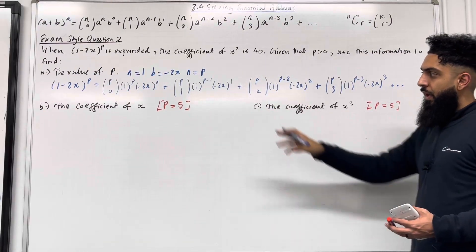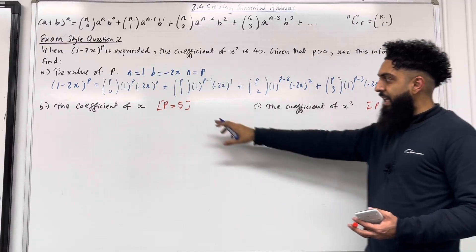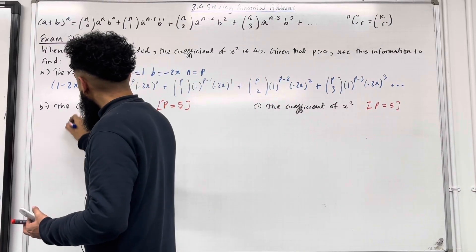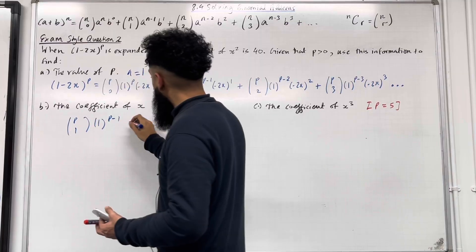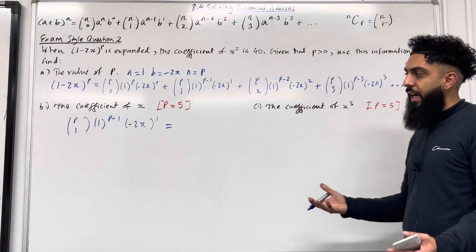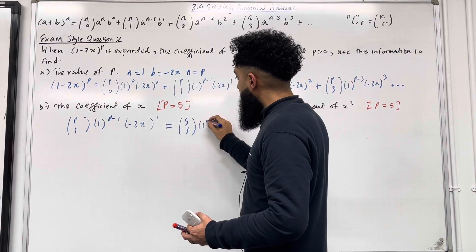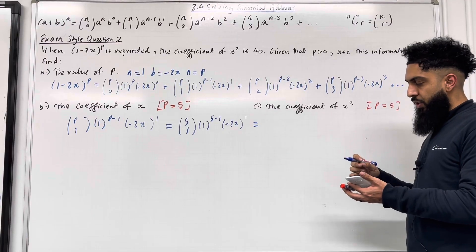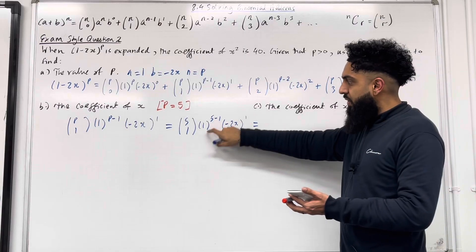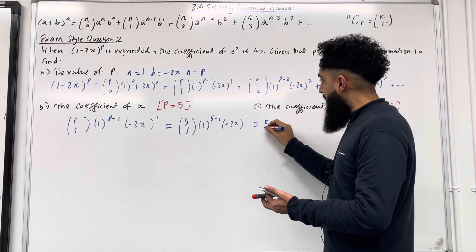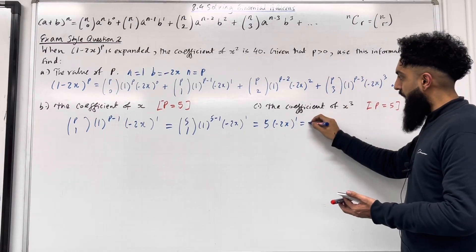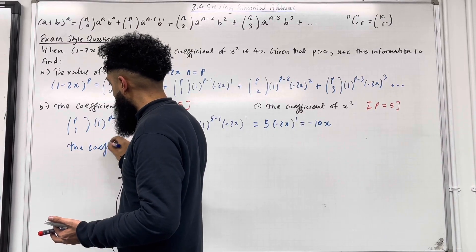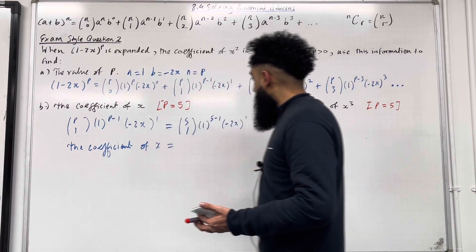Moving on to Part B. We want to find the coefficient of x. With p = 5, the x term is pC1 · 1^(p−1) · (−2x)^1 = 5C1 · 1^4 · (−2x) = 5 × (−2x) = −10x. So the coefficient of x is −10.